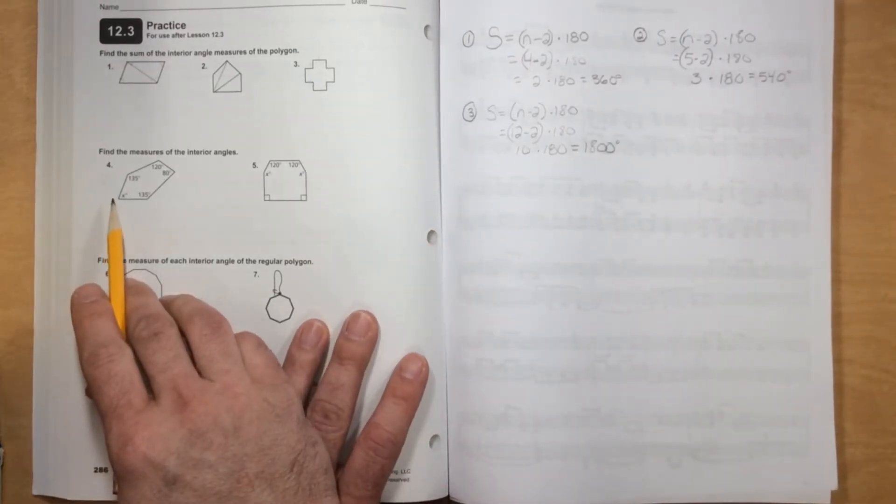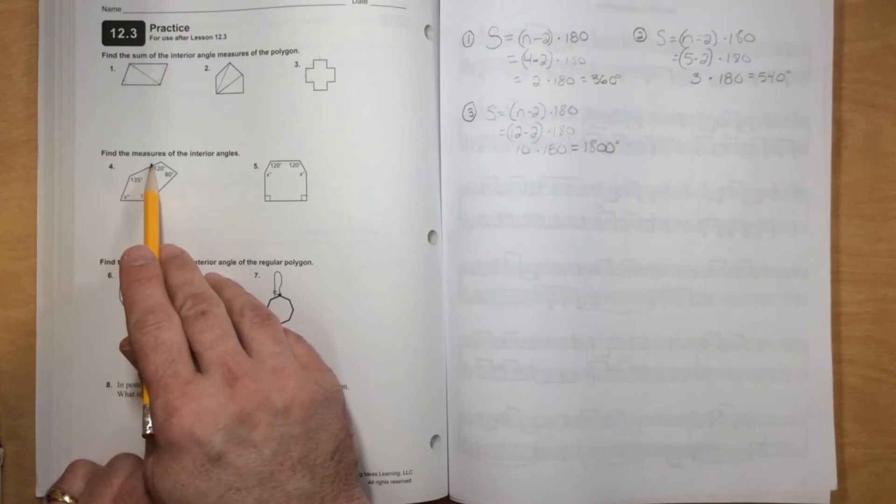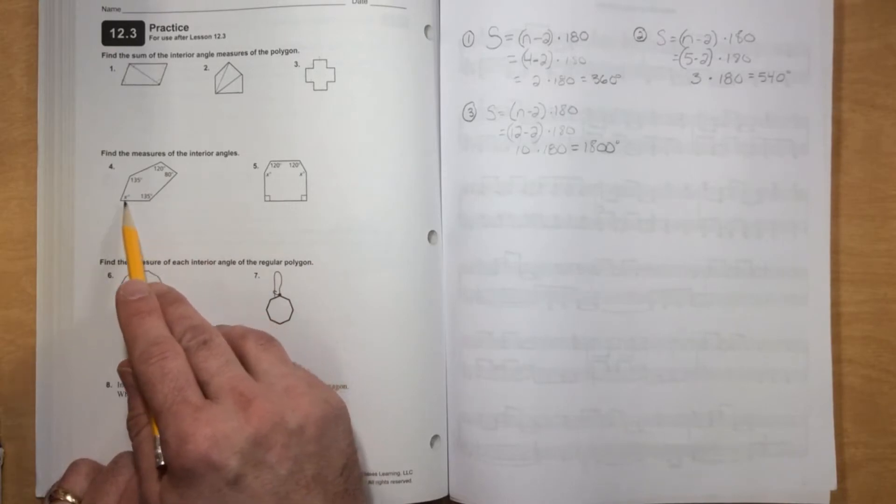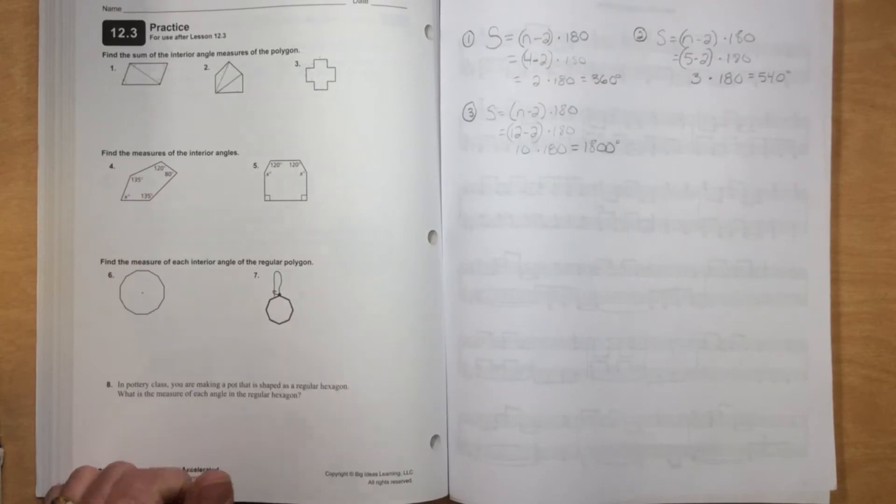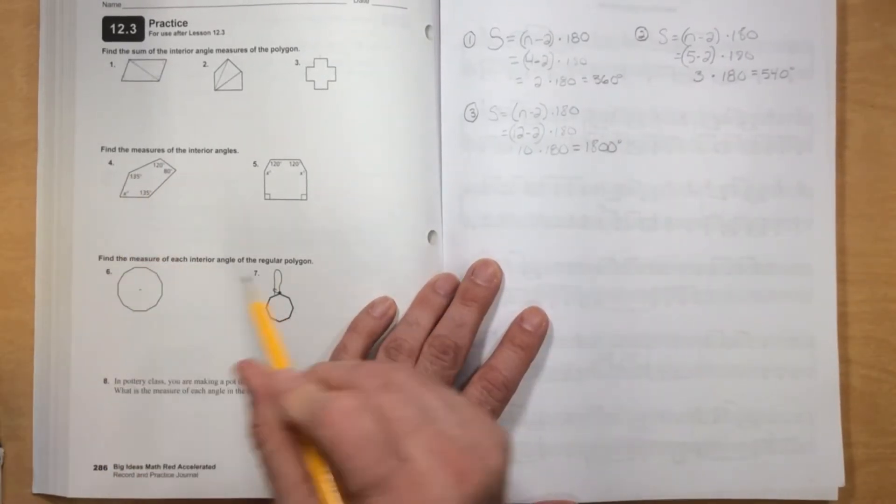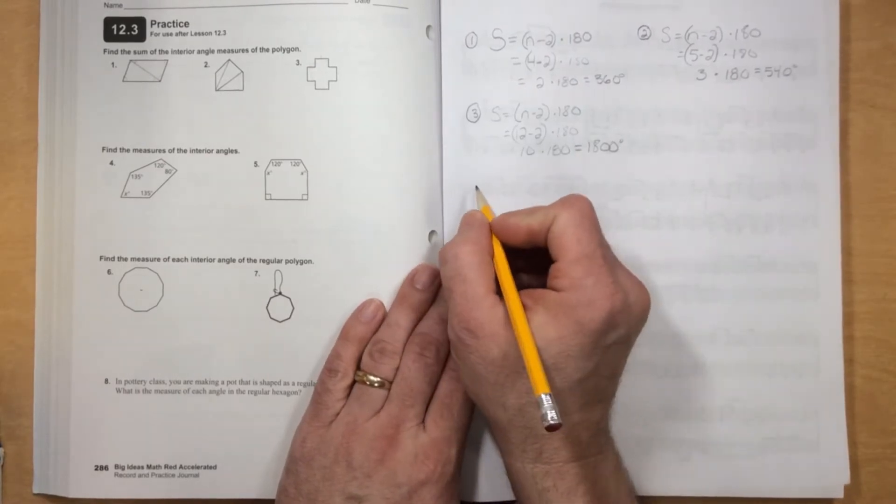Number 4. Find the measures of the interior angles. So this is a 5-sided shape. First I have to figure out what these angles are going to add up to. Now, the nice thing is in number 2 we found that a pentagon, or a 5-sided shape, is going to equal 540 degrees.